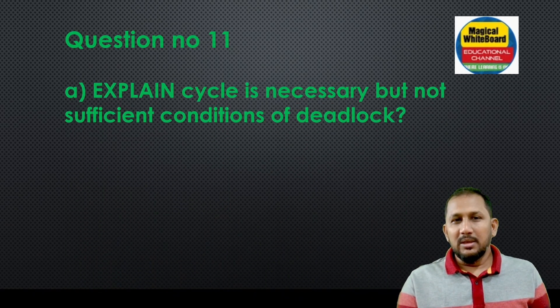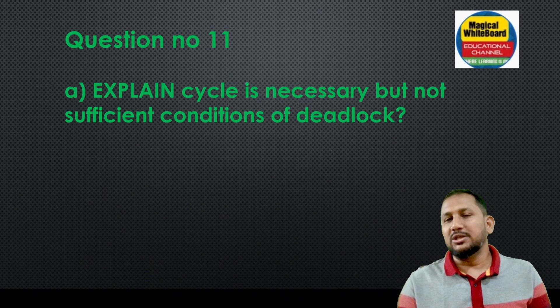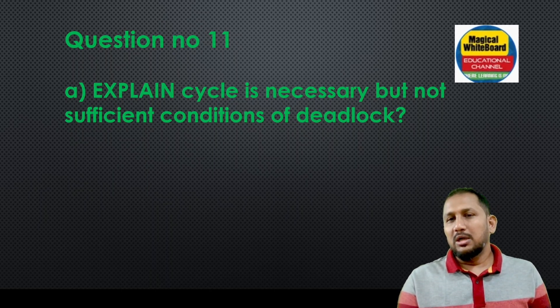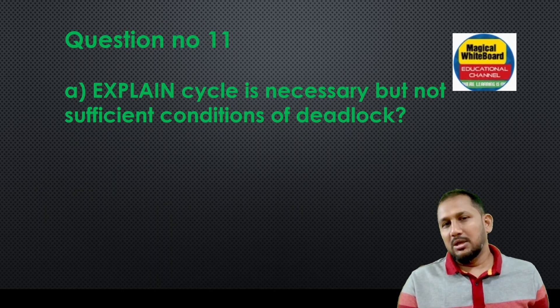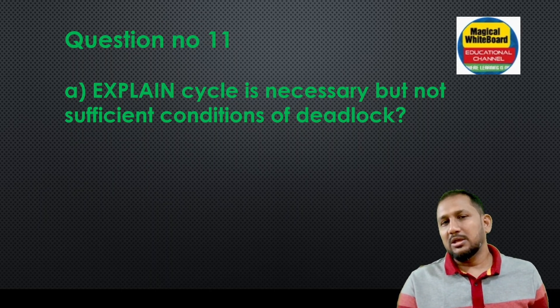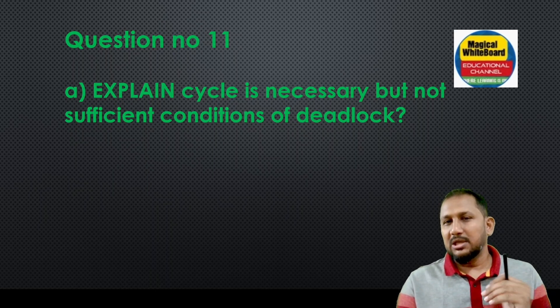Question number eleven: explain that a resource allocation cycle is a necessary but not sufficient condition for deadlock. The end of a cycle does not always mean deadlock has occurred — if each resource has only one instance, then it is sufficient; otherwise recovery is possible.